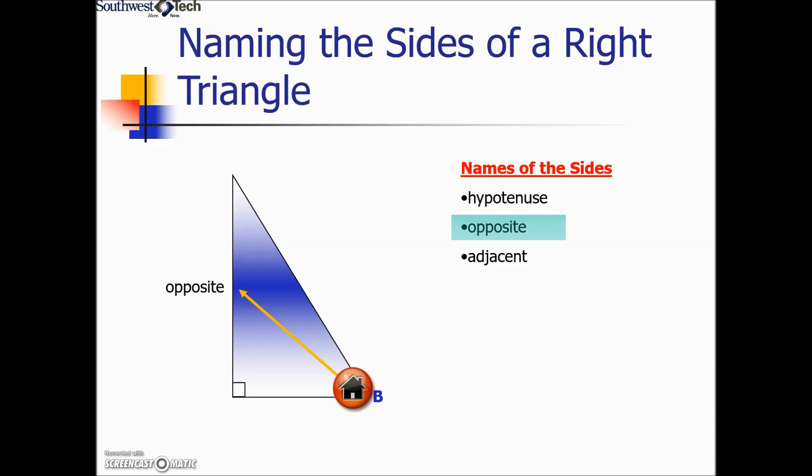So here on the left-hand side, this leg has the specific name of opposite. The hypotenuse is not going to change regardless of which reference angle we choose. It's always the longest side.